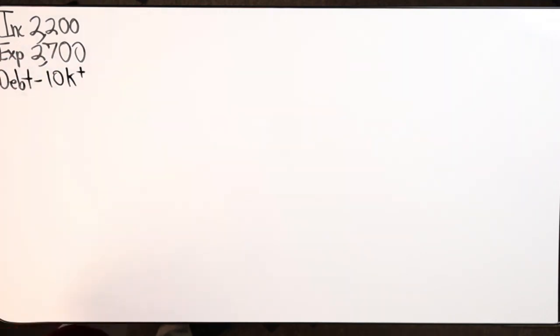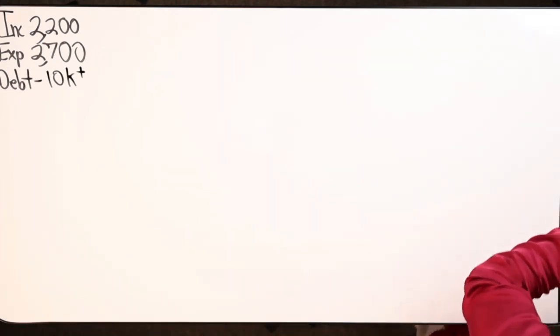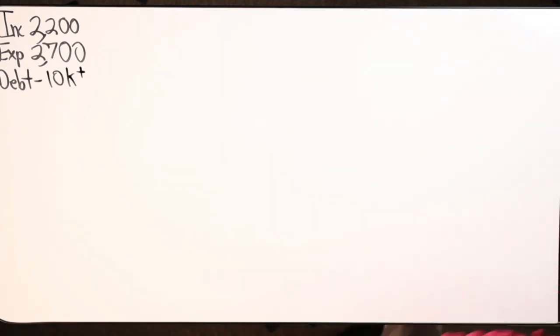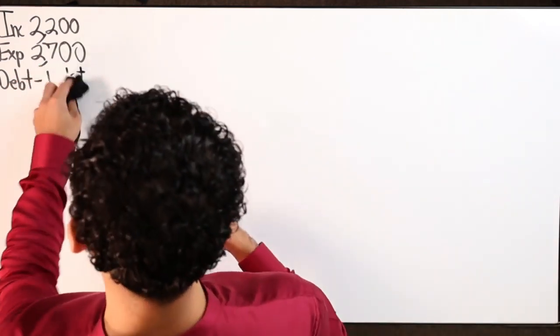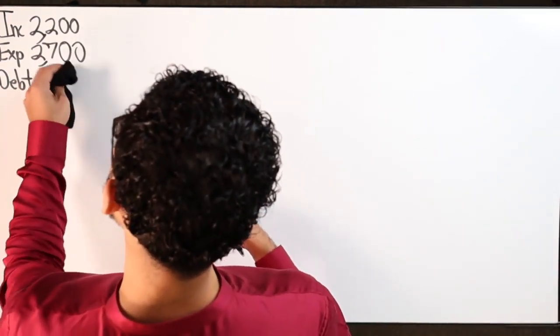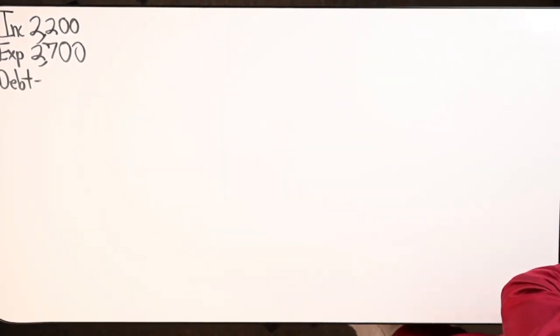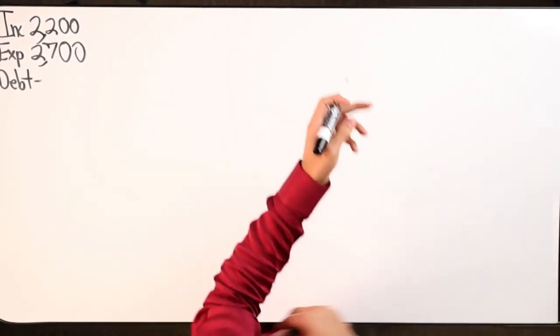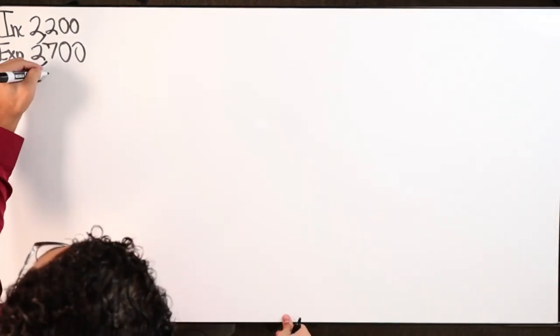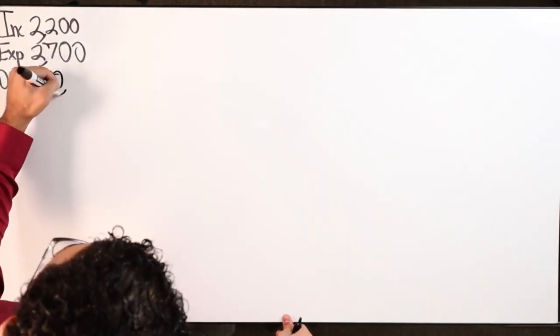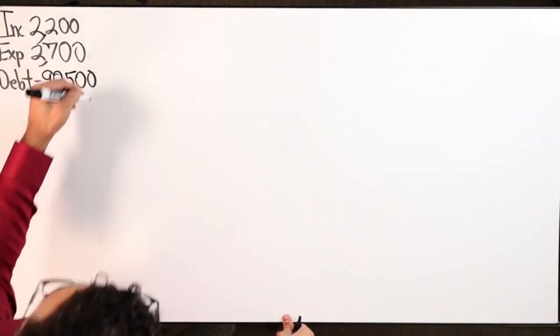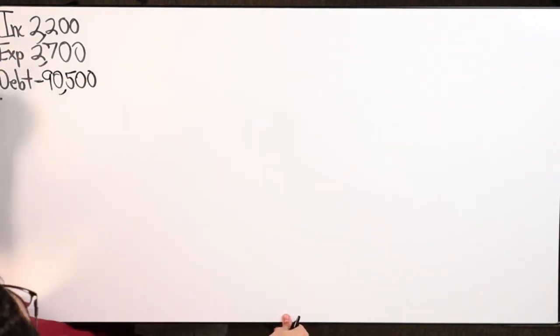Oh, never mind. I did write it. This lady got $80,000 in student loans. Ridiculous. $80,000 in student loans and a $10,500 car. So $90,500. I don't think she's paying anything on the student loans. Those might be in deferment.